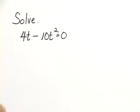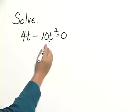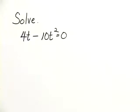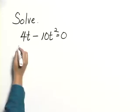We're going to want to factor. We have a 0 on one side, so we factor this. We begin by looking for a common factor, and there is one: 2t.